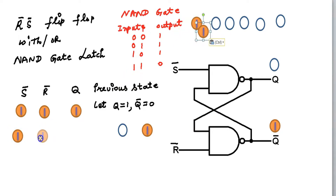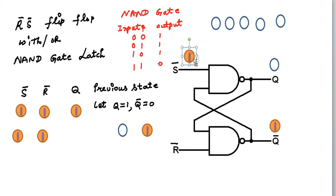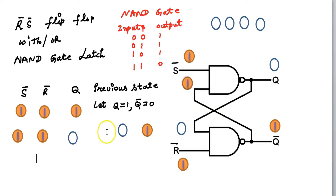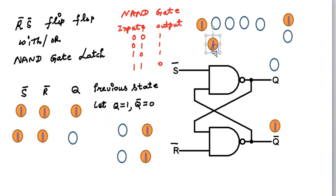Now if Q is 0 and Q complement is 1, and again the inputs are S complement = 1 and R complement = 1. If Q is 0 here, this line will be at 0. Two inputs of the lower NAND gate become 1, 0 — that gives 1. So the whole line will be at 1, making both inputs of the upper gate 1, which gives 0. That will be the stable state.